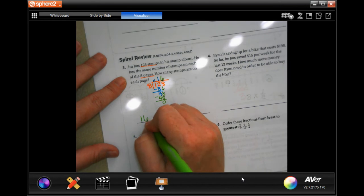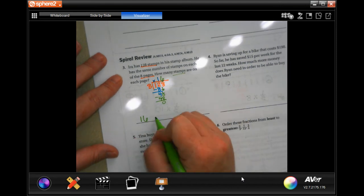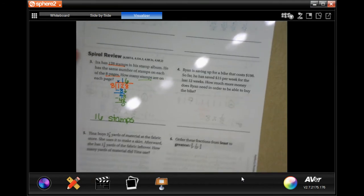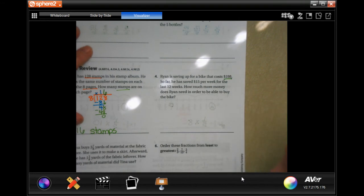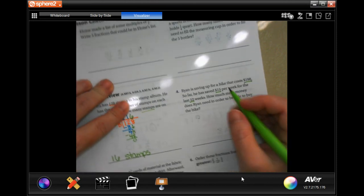So 16, and it's how many stamps, so 16 stamps. Done. Okay, Ryan is saving up for a bike that costs 198 dollars. So far he saved 15 dollars per week for the last 12 weeks. How much more money does he need in order to be able to buy the bike?